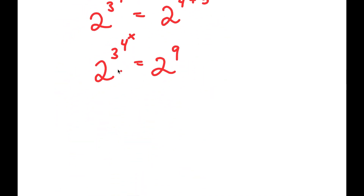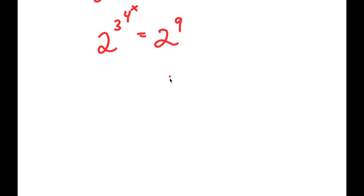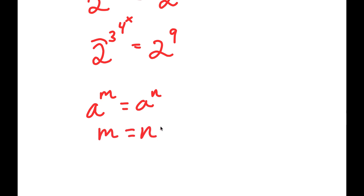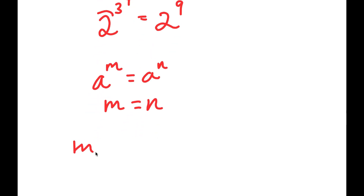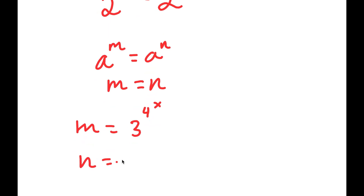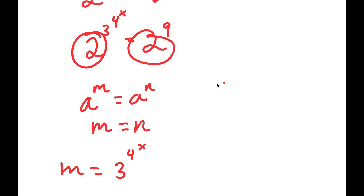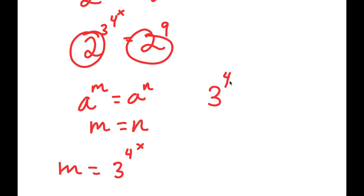So now going back, we have 2 to the power of 3 to the power of 4 to the power of x is equal to 2 to the power of 9. If I have something in the form a to the power of m is equal to a to the power of n, this means that m is equal to n. So in this case, m is equal to 3 to the power of 4 to the power of x, and n is equal to 9. Because these two bases are the same, this means that 3 to the power of 4 to the power of x is equal to 9.